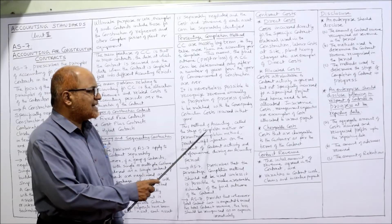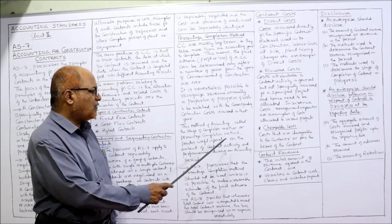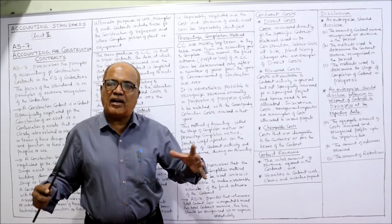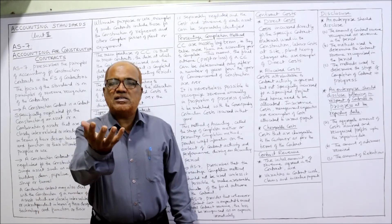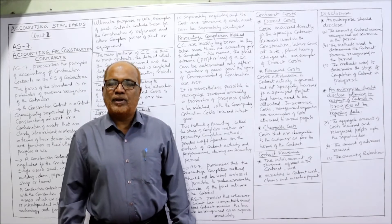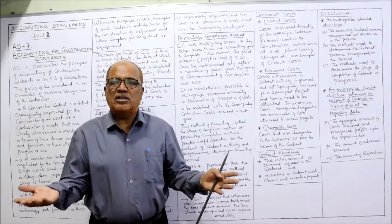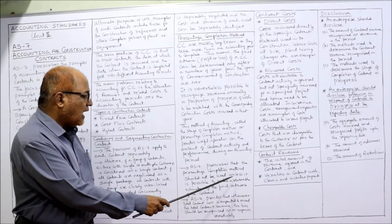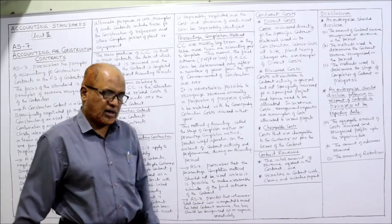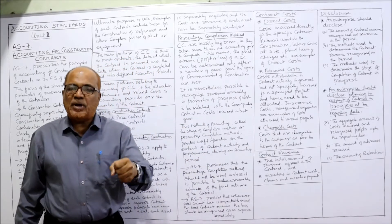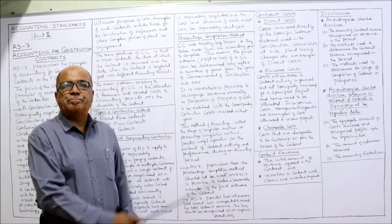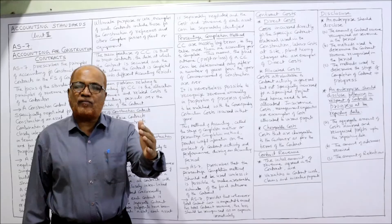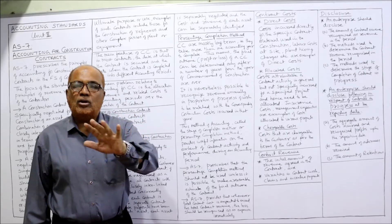The percentage completion method — also called the stage of completion method — provides useful information on contract activity and performance during an accounting period. AS 7 prescribes that this method should not be used unless it is possible to make a reasonable estimate of the final outcome of the contract. If the contractor cannot estimate reliably, profit or loss should be ascertained only on completion of the contract.